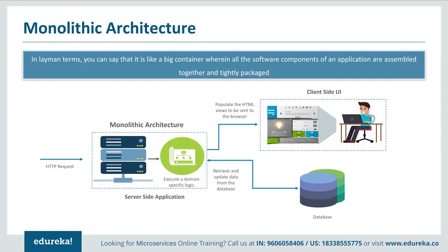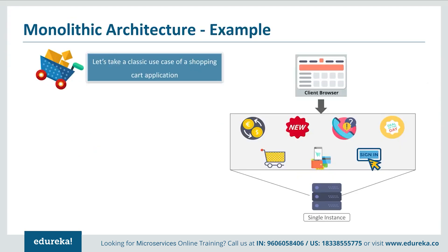Also, if only any one feature had to be updated, then the complete system had to be built again. Now let's understand more about monolithic architecture by using a shopping cart application for reference. As a user, when you open a shopping cart application, you see different features for handling wish lists, new labels, new brands in the markets, customer services and so on. But if the developers decided to build this application on a single framework, then all the features were put together on a single database. This not only created problems for scalability, but also for fault tolerance and agility.